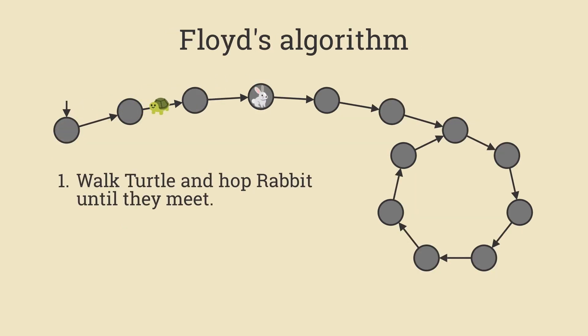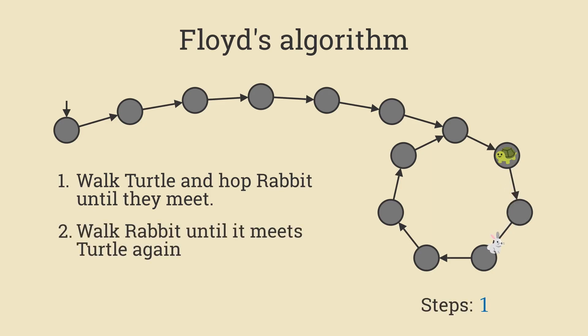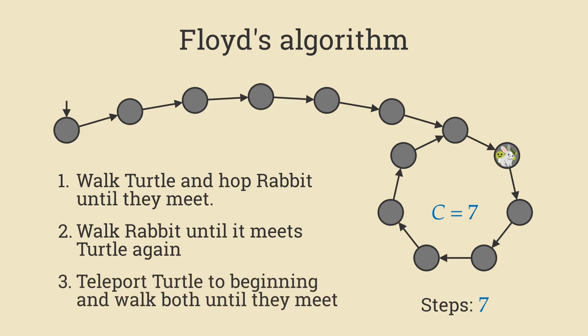What's usually referred to as Floyd's algorithm starts off in the same way. Once the two characters have met, it's really easy to figure out C. For example, we can just have the turtle stand in place and the rabbit walk around the cycle, counting the number of steps it takes until it comes back to the turtle. But now for the magic. We happen to be standing in the right spot for finding L. If we teleport the turtle back to the beginning and march both characters at the same speed, they happen to meet right at the beginning of the cycle, meaning that the number of steps that they take will be exactly L.